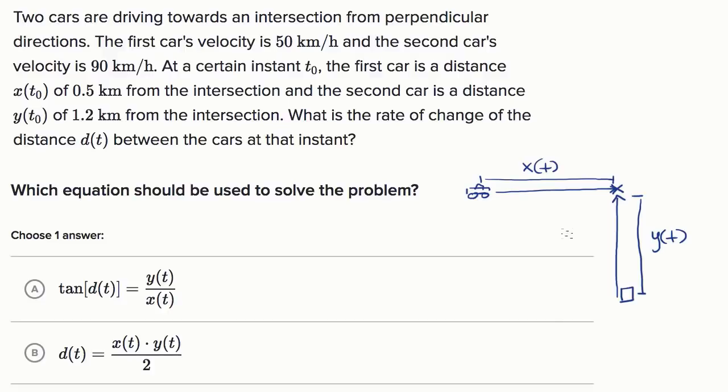Well, we could just use the distance formula, which is essentially just the Pythagorean theorem, to say the distance between the cars would be the hypotenuse of this right triangle. Remember, they're traveling from perpendicular directions. So that's a right triangle there. So this distance right over here would be x(t) squared plus y(t) squared, and the square root of that. And that's just the Pythagorean theorem.